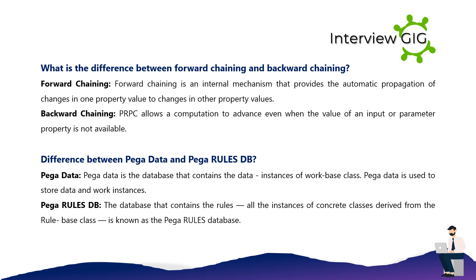What is the difference between forward chaining and backward chaining? Forward chaining is an internal mechanism that provides the automatic propagation of changes in one property value to changes in other property values. Backward chaining: PRPC allows a computation to advance even when the value of an input or parameter property is not yet known. What is the difference between Pega Data and Pega Rules DB? Pega Data is the database that contains the data instances of the work-base class and is used to store data and work instances. Pega Rules DB is the database that contains the rules — all instances of concrete classes derived from the rule-base class — and is known as the Pega Rules database.